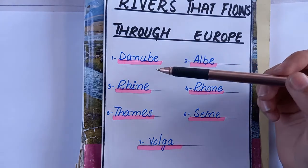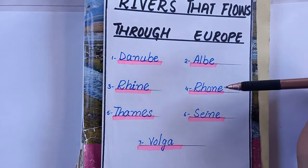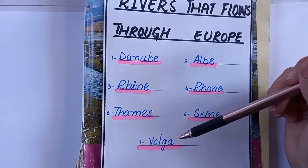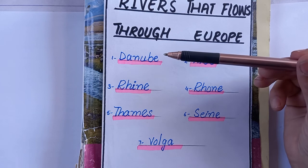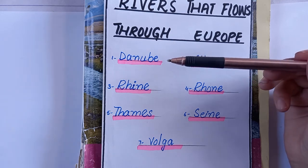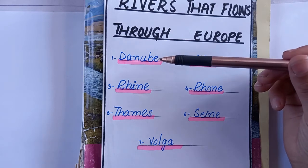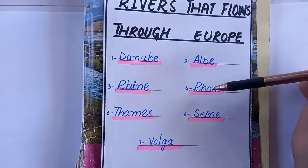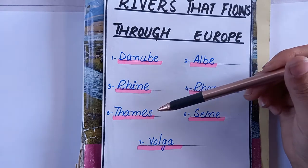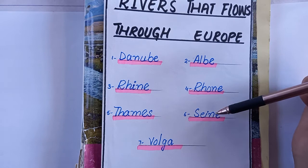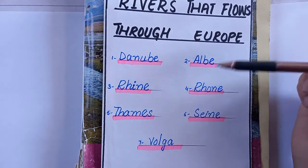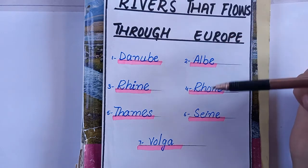Which rivers flow through continent Europe? There are total seven rivers which flow through continent Europe. They are: Danube, Elbe, Rhine, Rhone, Thames, Seine, and Volga. There are seven rivers flowing through continent Europe.